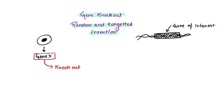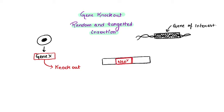How do we do that knockout? What we first do is construct this gene of interest in vitro. We take the gene of interest and insert a gene called the neomycin resistance gene inside it, breaking the gene of interest apart. Once this neomycin resistance gene is inserted into our gene of interest, we lose the function of the gene of interest.